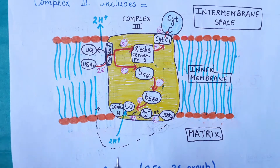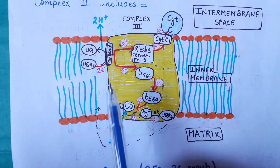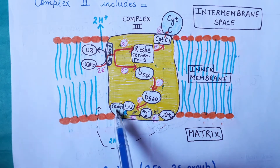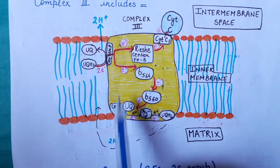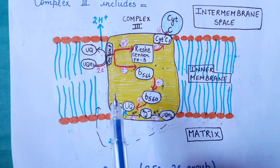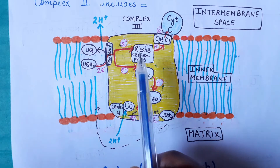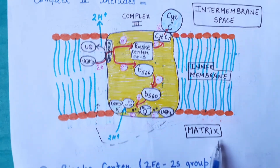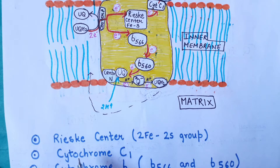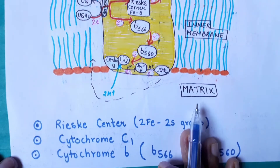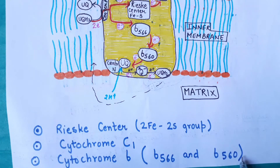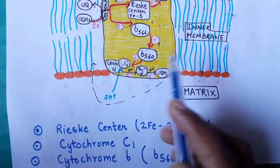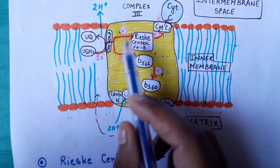Complex III consists of the following components. There are two centers: center P and center N, which are the binding sites for ubiquinone or ubiquinol. Complex III also consists of the Rieske center, which contains two iron-sulfur groups. It includes cytochrome C1 and cytochrome B, which consists of two heme groups: B566 and B560, also mentioned in some books as B562.